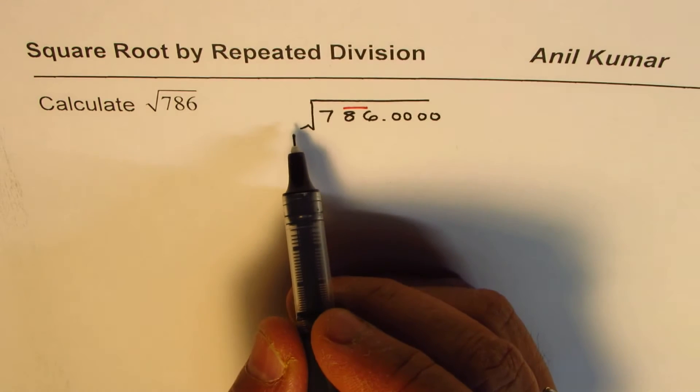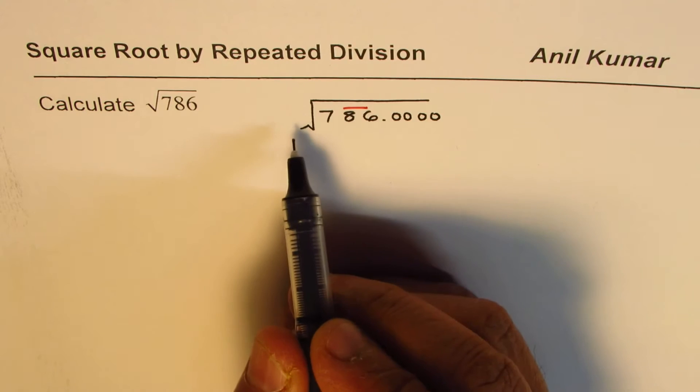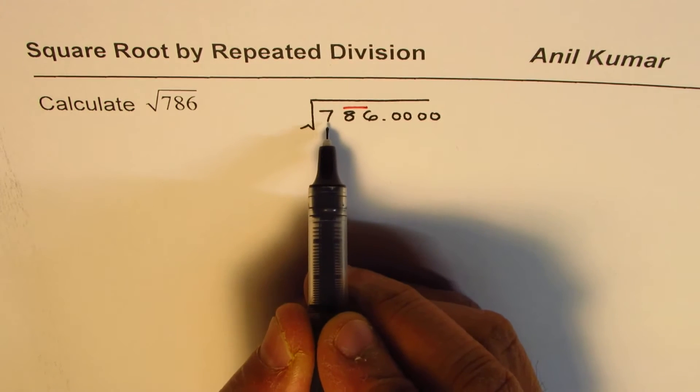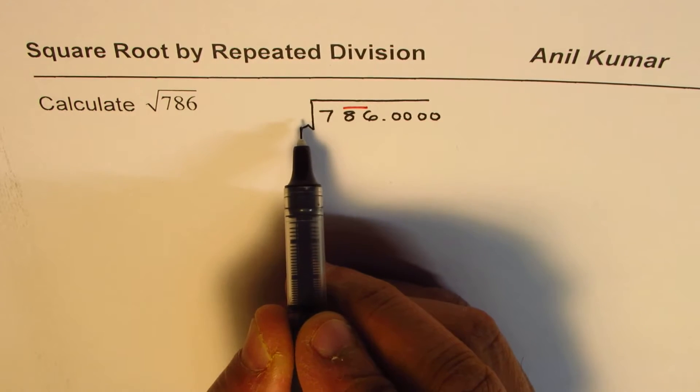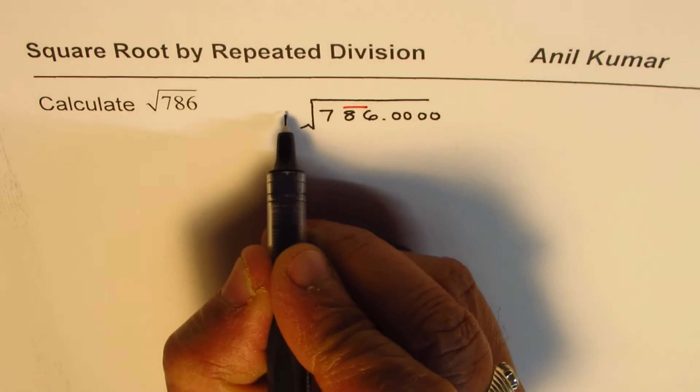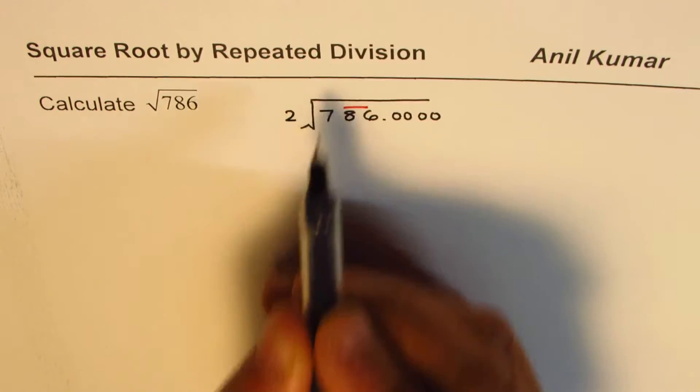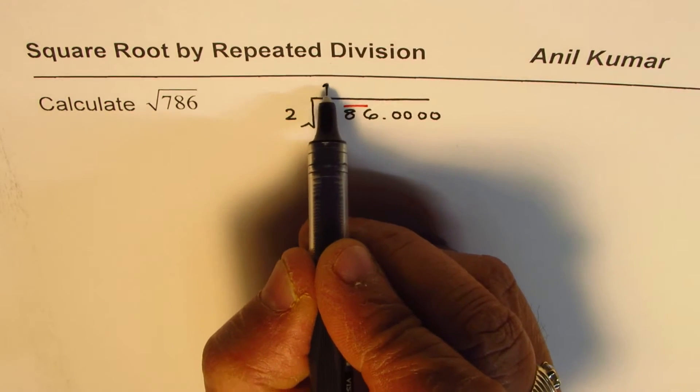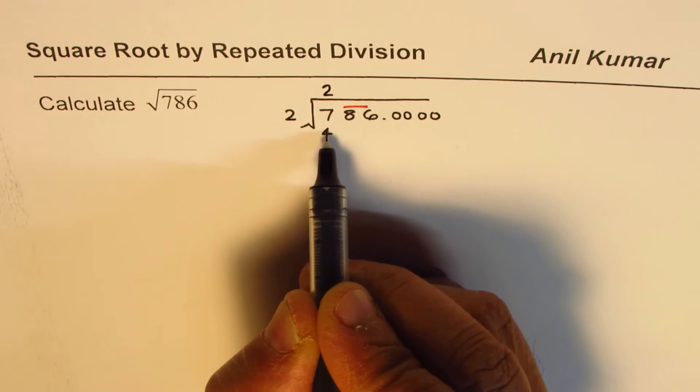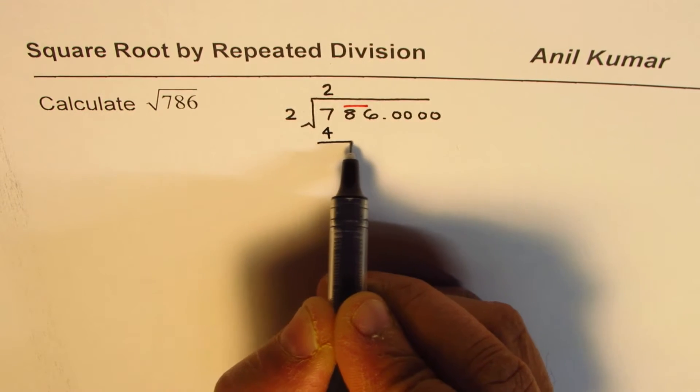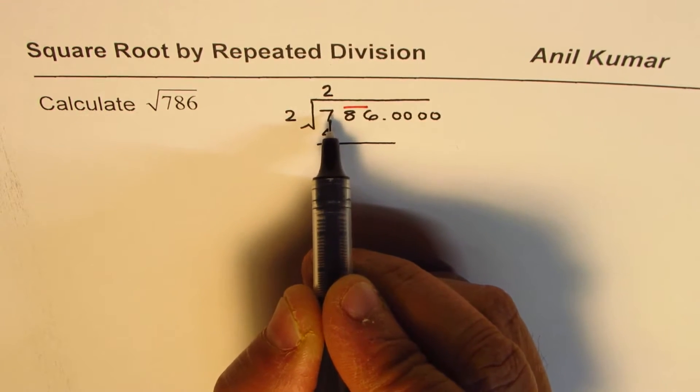Now you need to look for two numbers which when multiplied to themselves give a result which is less than 7. That is 2 times 2 is 4. 3 times 3 is 9, we cannot use that. So here we normally write the same number on the divisor and on the quotient. 2 times 2 is 4, and the remainder is 7 minus 4 which is 3.